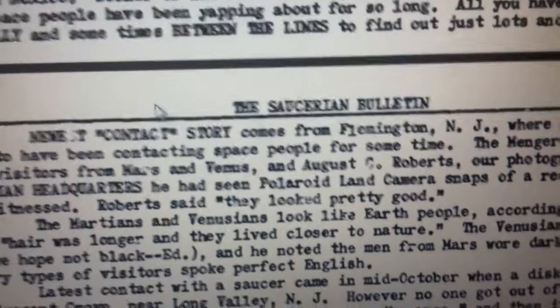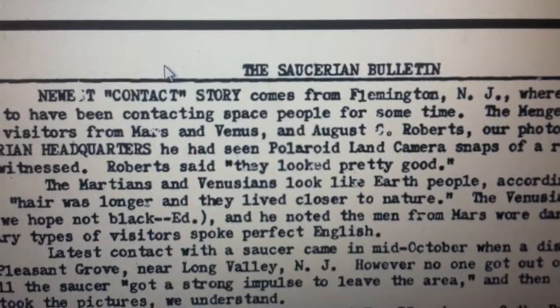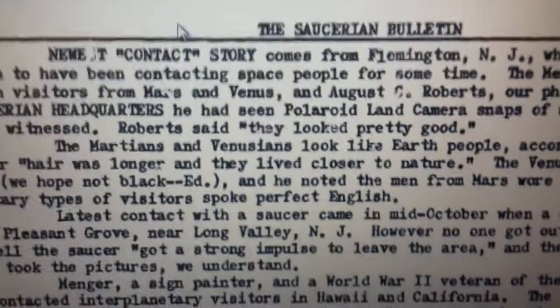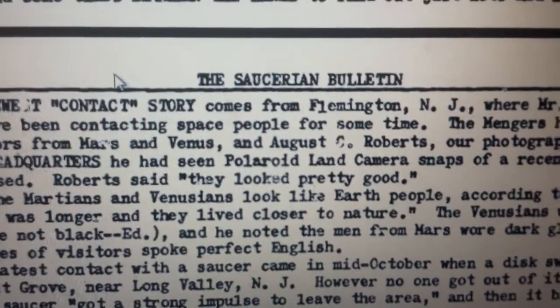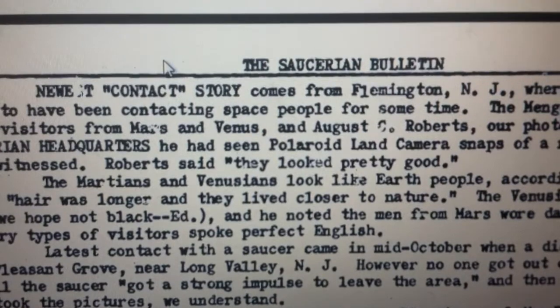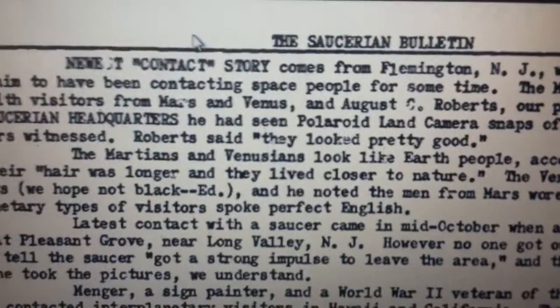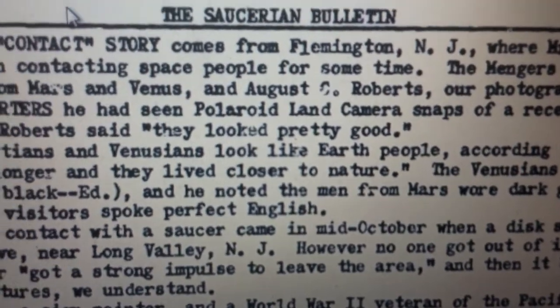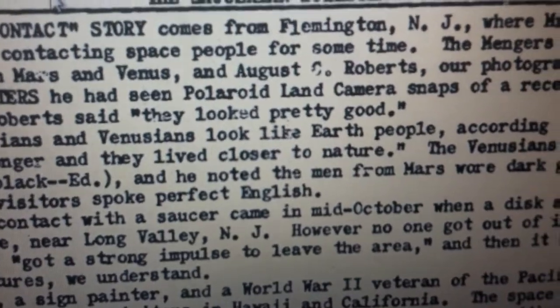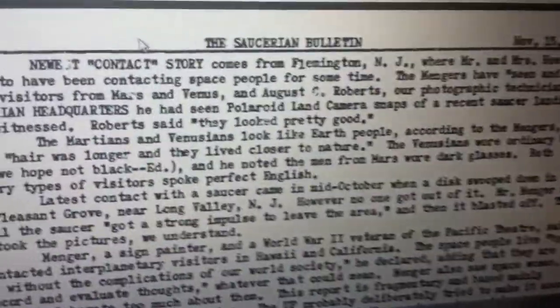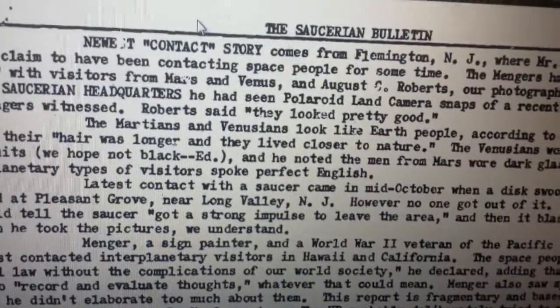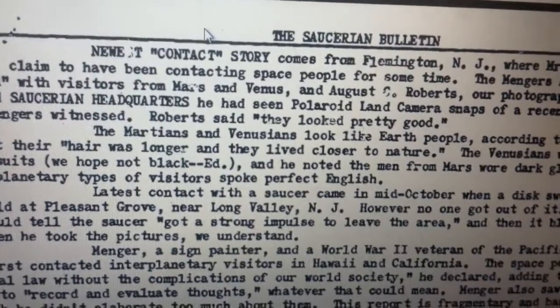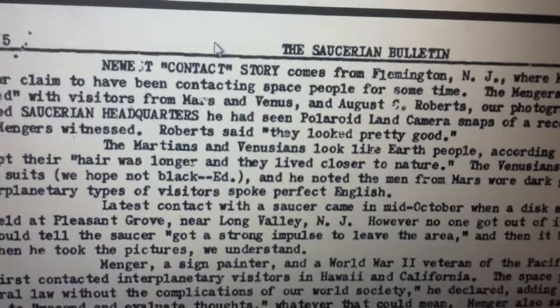Why the hell would he say Menger's photographs look pretty good when everyone else around the UFO field would say it is not real? I find it funny that Augusty Roberts, who worked for the Saucerian Bulletin from 1953 all the way to 1962, why didn't he tell his boss Gray Barker that what he saw at Howard Menger's home was not real? And you don't see him talking about anything about Valiant Thor either. If Valiant Thor was so real, why didn't he mention it to his boss from the Saucerian Bulletin?